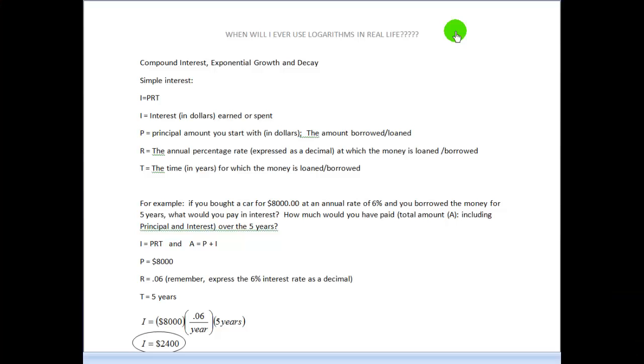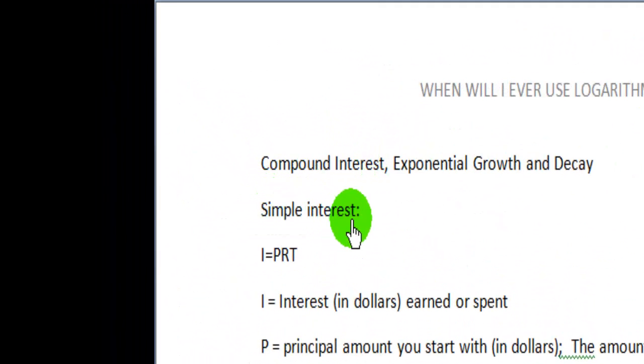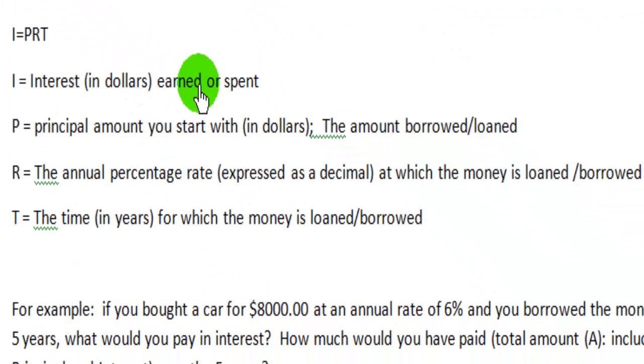I want to look at three different ways to examine the problem that was addressed in the beginning of the video. First, we're going to consider simple interest. There's also compound interest, and there's interest that is continuously compounded. With simple interest, we have the equation I equals PRT, where I is interest in dollars, either earned or spent. But in this case, we're going to be talking about spent.